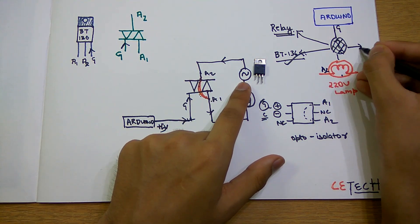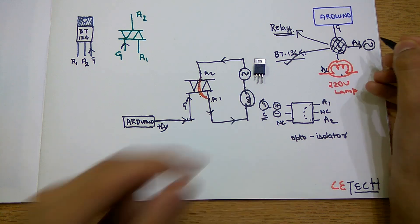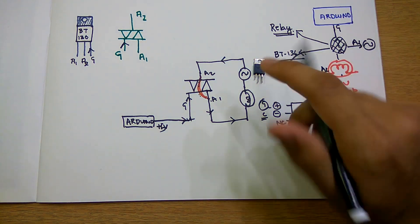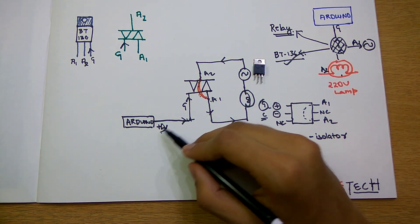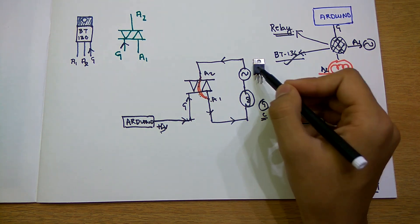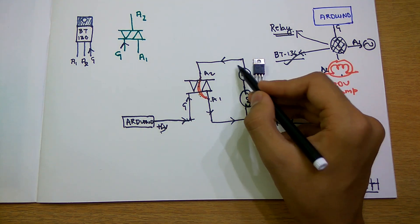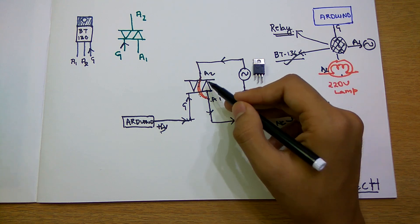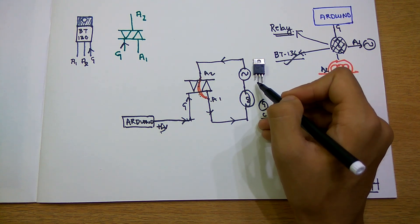When we get a signal of 5 volts or any plus voltage in the gate terminal, we will get an output and a connection. This A1 and A2 get connected, these two terminals.